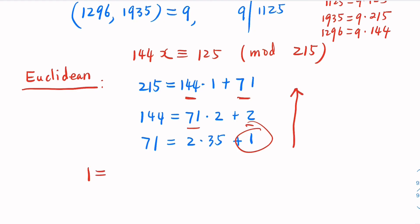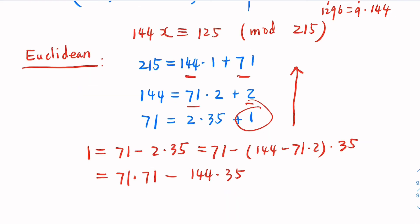Here, 1 would equal 71 minus 2 times 35. Here, 2. Replace 2 here with 144 and 71. Equal 71 minus 144 minus 71 times 2, and then times 35. You have to combine 71 here. So, equal 71 times negative, negative, that's positive, 2 times 35, 70. And there's 1 here.